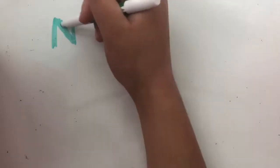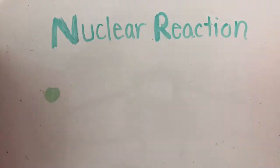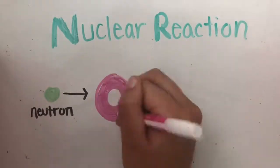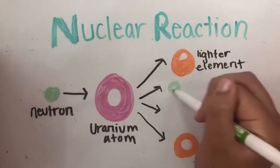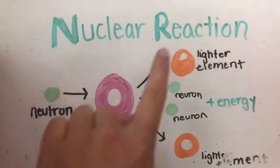Dalton was proved wrong once again because atoms can actually be destroyed through a process called the nuclear reaction, where the atom is destroyed, creating energy and two new elements.